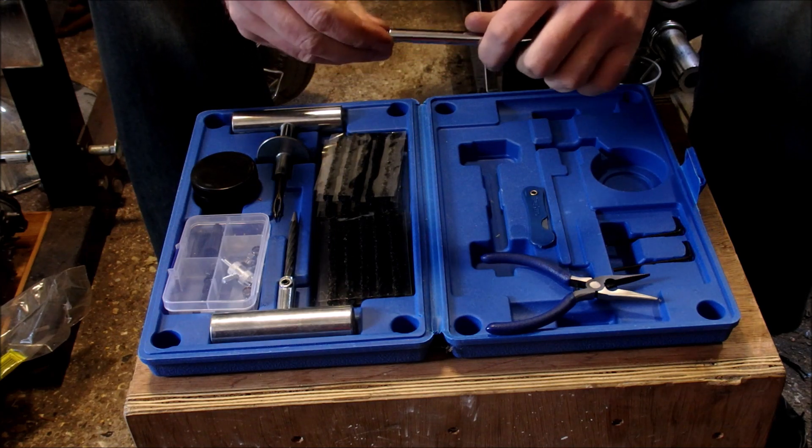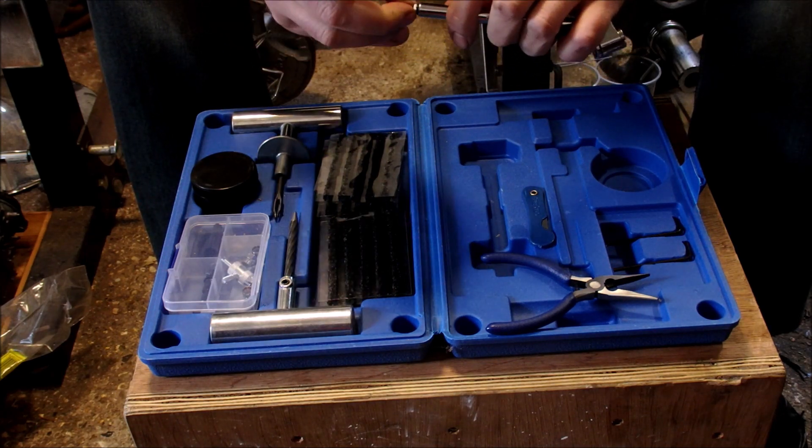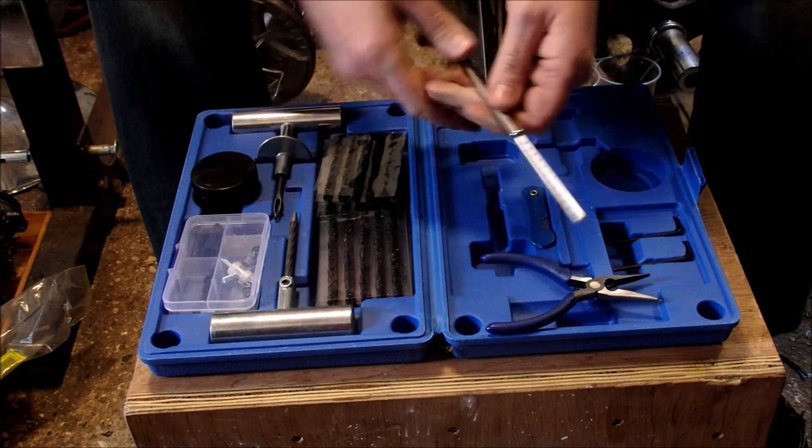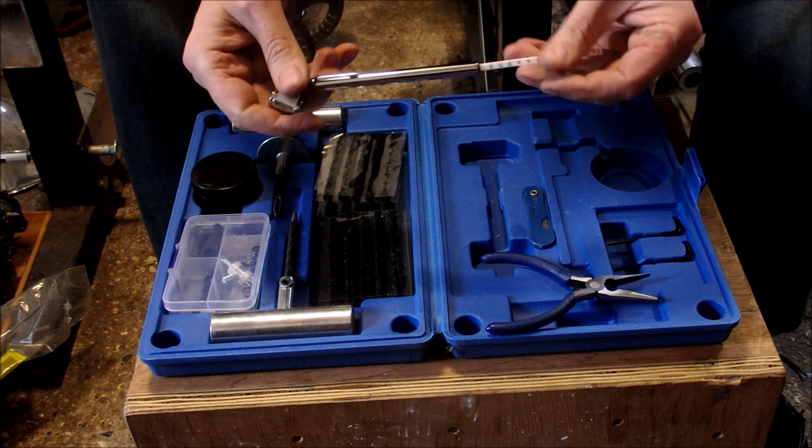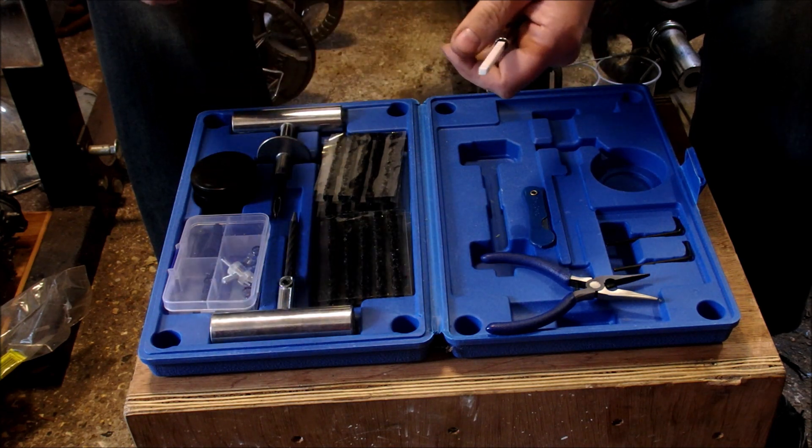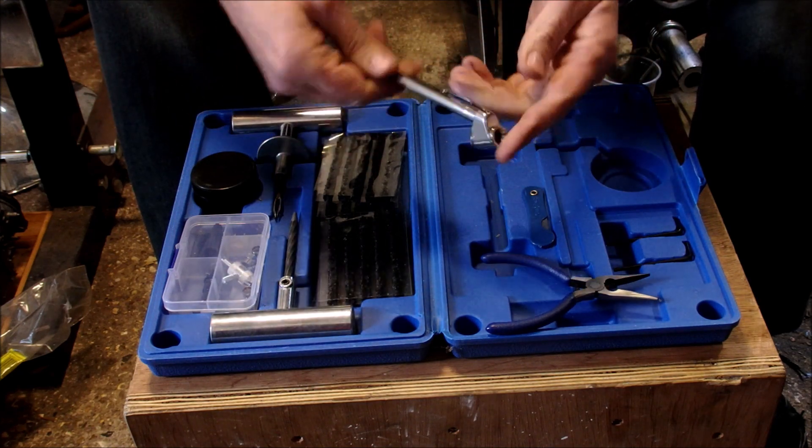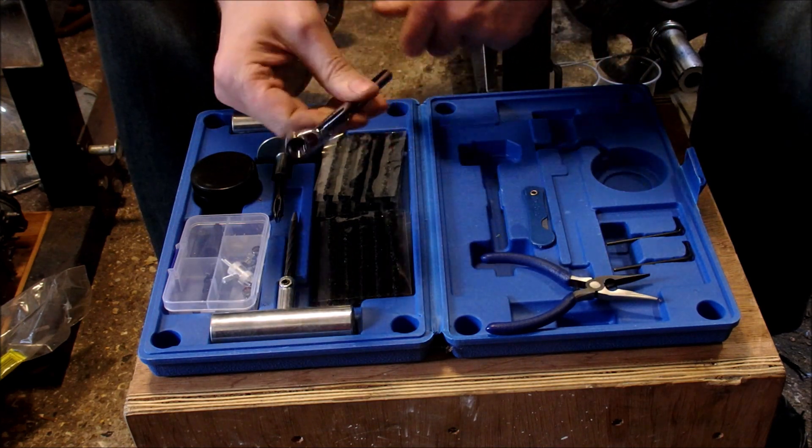Next thing you're going to get is a 120 PSI pressure gauge. Again, I wouldn't put this in the kit. I have a little electronic one that sits on my key ring. I just push it on there and it gives you a digital display of how much pressure. But if you don't have one of those, that will be of use to you. And it's kind of small, it goes into the kit.